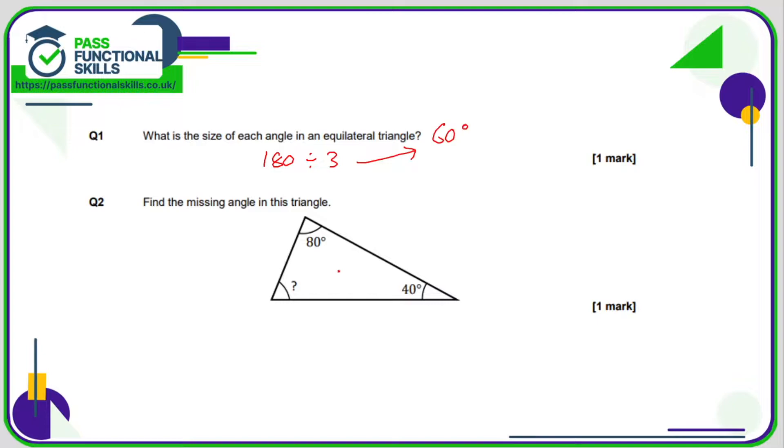Question two is also non-calculator. These two angles together add up to 120 degrees. The total sum of the angles is 180, so 180 minus 120 equals 60. The missing angle is 60 degrees. We can double check: 60 plus 40 is 100, plus 80 equals 180.